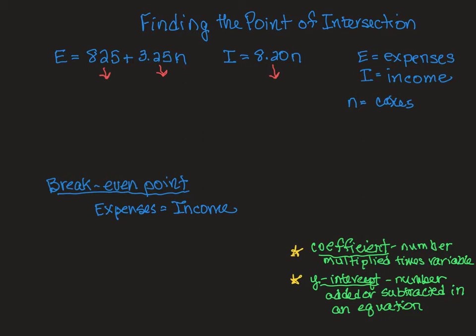So in this case, 3.25 or $3.25. This is the coefficient. Okay. So I want us to get used to identifying these. And in the income equation, 8.2 or $8.20 is the coefficient. That is what I am multiplying times the variable. So when they ask you what the coefficient means, you know what number they're talking about.